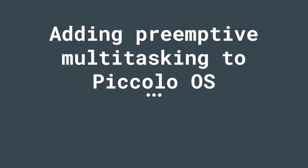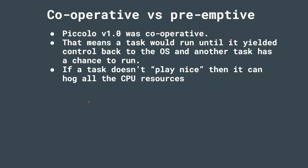Piccolo OS version 1.0 was cooperative, meaning a task would run until it gave back control to the OS using the Piccolo yield function. If it didn't do that — if it didn't play nice — it could hog all of the CPU resources. With everyone playing nice that's fine, but it means you have to be very careful about how you write your tasks.